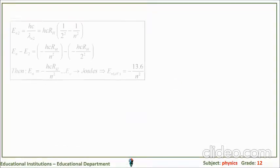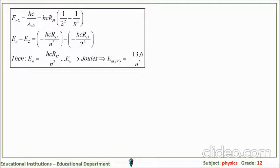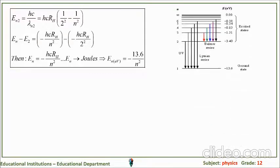Going from level n to level 2, the energy of the photon equals hc times the Rydberg formula, which gives E_n = −hcR_H / n². Converting to electron volts, the energy is E_n = −13.6 / n² eV — this formula is for hydrogen only. For n=1 (ground state): E = −13.6 eV; for n=2: E = −13.6/4 = −3.4 eV; and so on. For n=infinity: E = 0 eV.